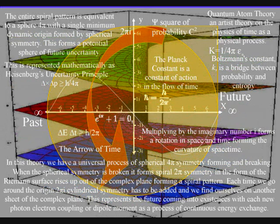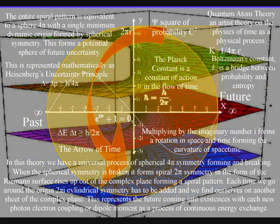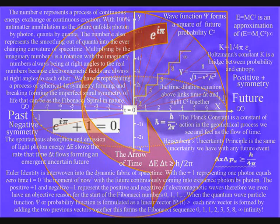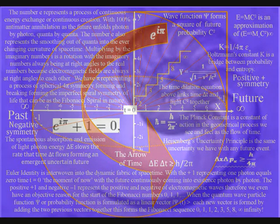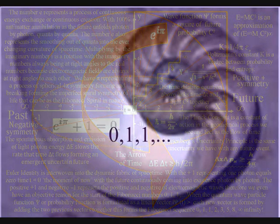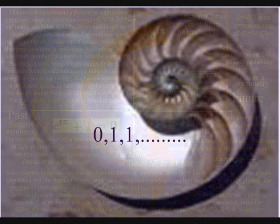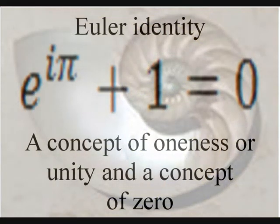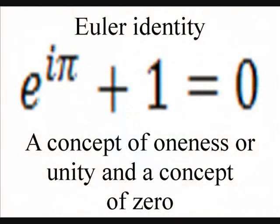As can be seen on the diagram, we already have zero representing the moment of now, time equals zero, with positive one and minus one representing the positive and negative of electromagnetic waves. Therefore we even have the start of the Fibonacci sequence in the diagram. This is linked to Euler's identity, giving this beautiful equation a place in the structure of space and time.